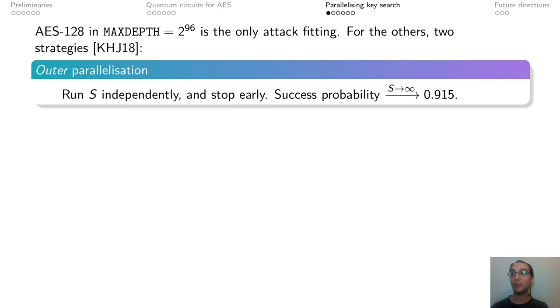One is called outer parallelization. Here the idea is that we have S machines that are running Grover independently, and we stop them early to save square root S depth. We notice that the success probability in this case can only approach about 91%, and so it's not possible to run a probability one attack by stopping early.